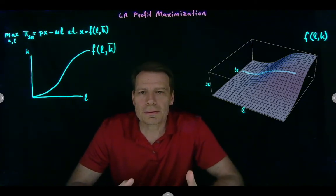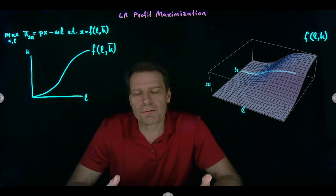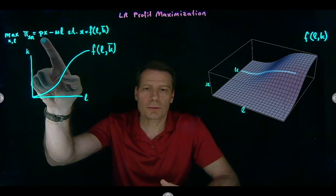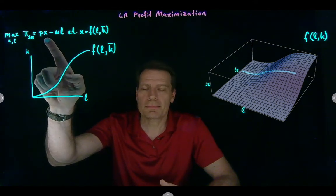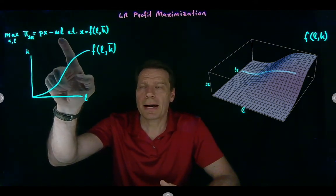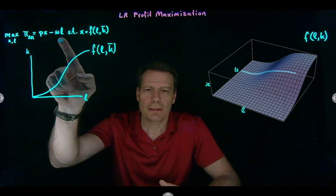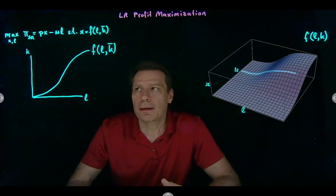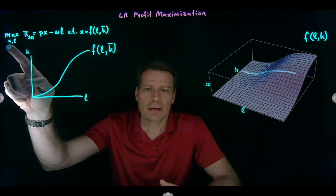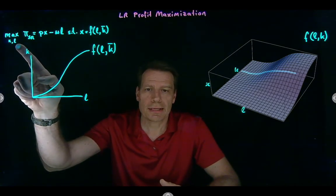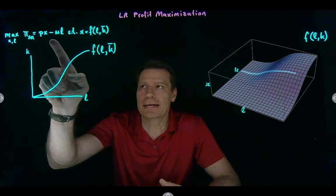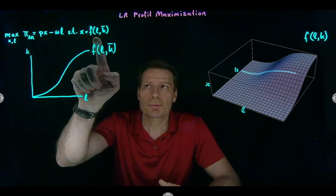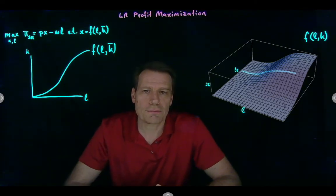We then thought about the firm's profit maximization problem in the short run, where short run profit is equal to your revenues — the price times the output that you sell — minus your labor costs, where the capital costs aren't true economic costs in the short run. The firm chooses how much to produce and how much labor to use to maximize this profit.